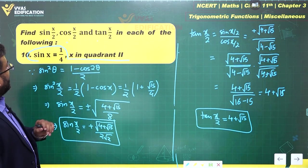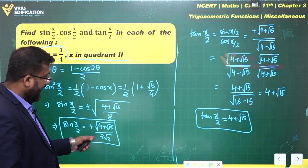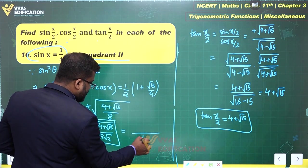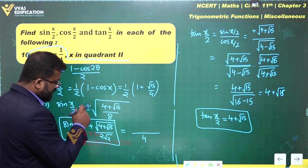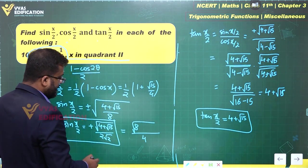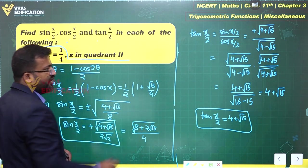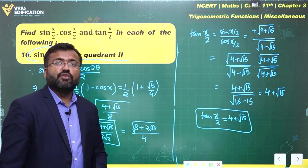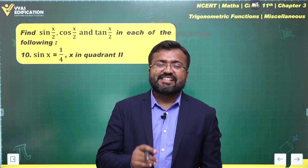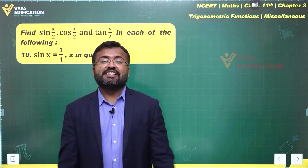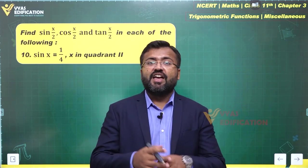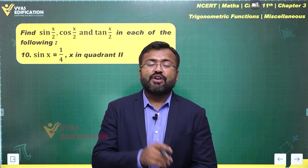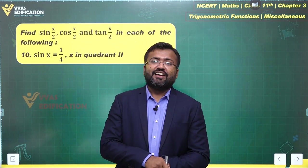We have found all three: cos(x/2), sin(x/2), and tan(x/2). After rationalizing cos(x/2) and sin(x/2), you get expressions with denominators of 4 and terms like 2√15. This concludes the miscellaneous exercise on trigonometric functions — Chapter 3 of Class 11 Mathematics. Subscribe to the channel for further NCERT solution videos.